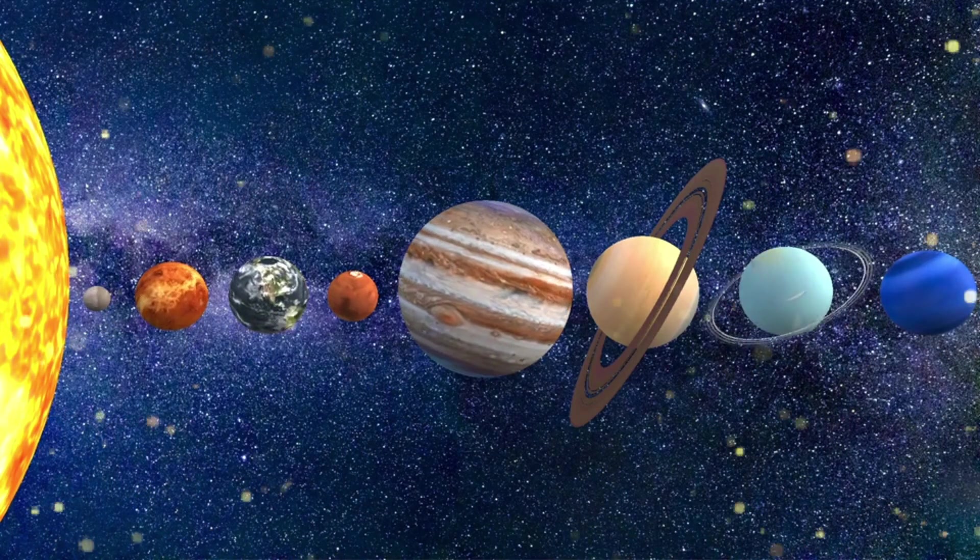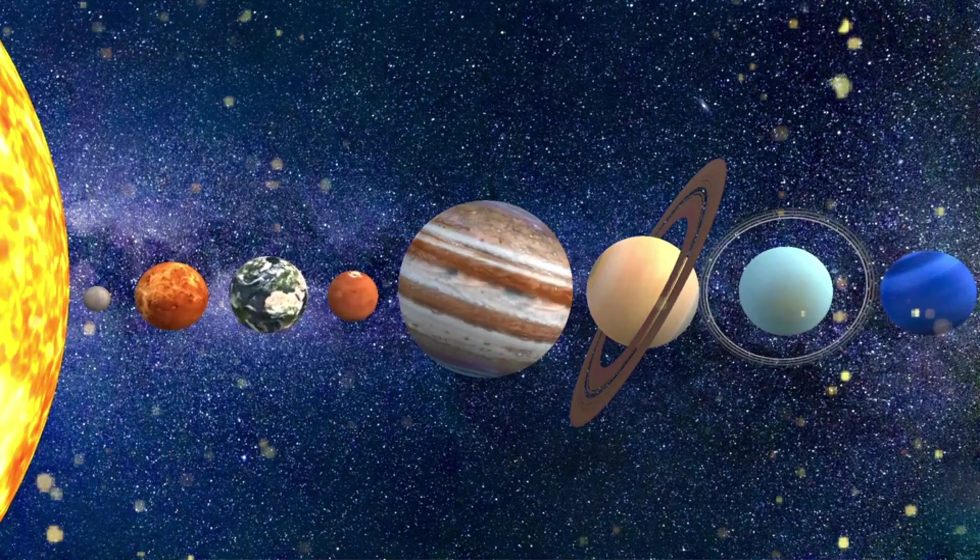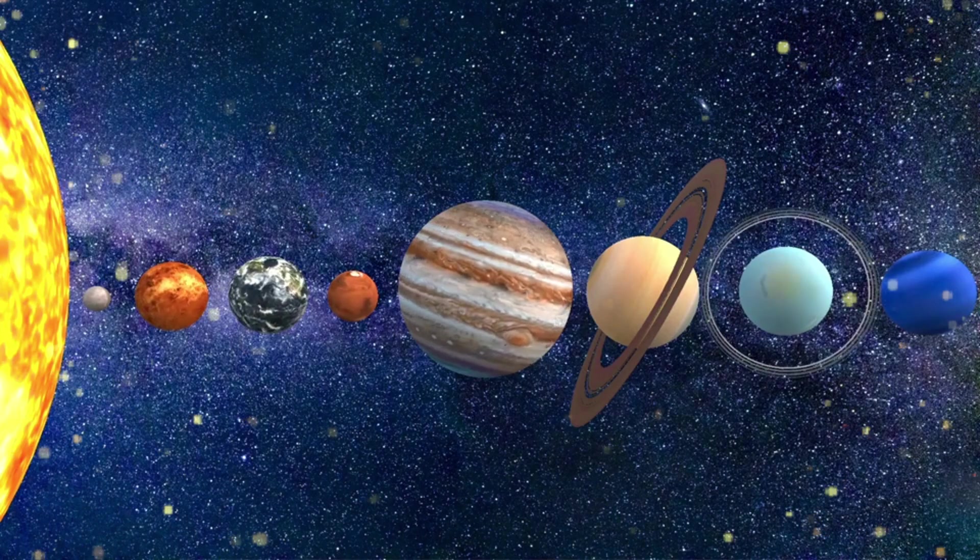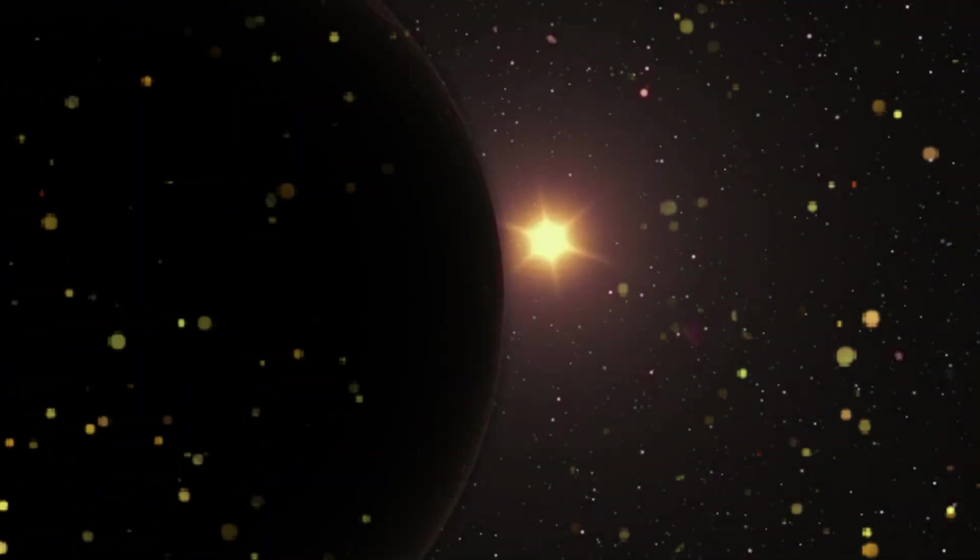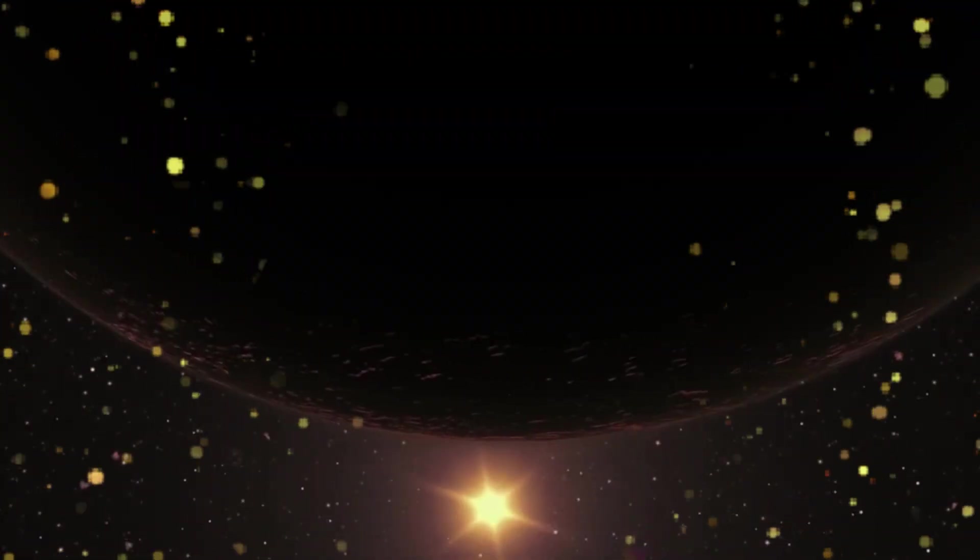Where is Planet Nine hiding? Imagine a game of hide-and-seek in the vast, dark space beyond Neptune. Planet Nine is believed to be hiding far, far away—so far that it might take light, the fastest thing in the universe, hours to reach it from the sun.